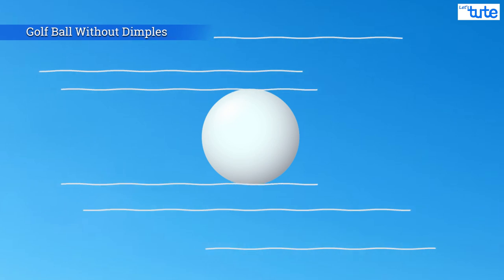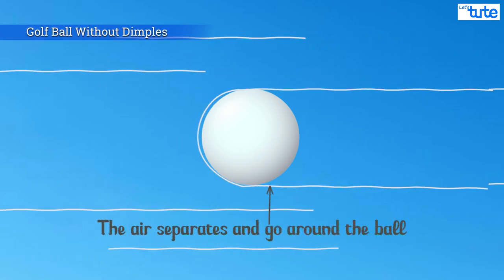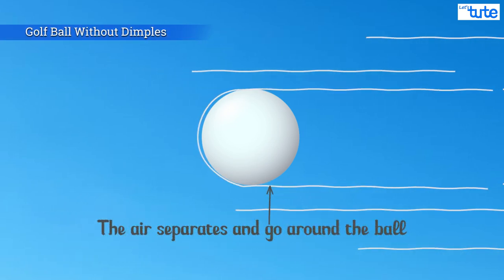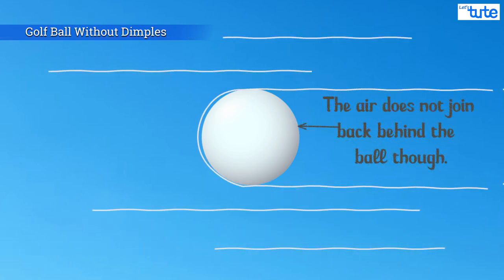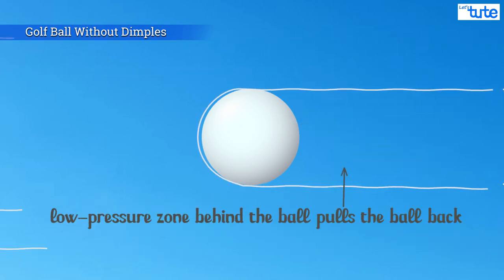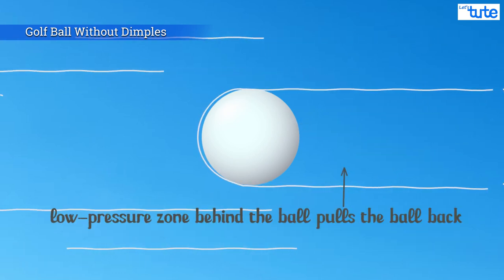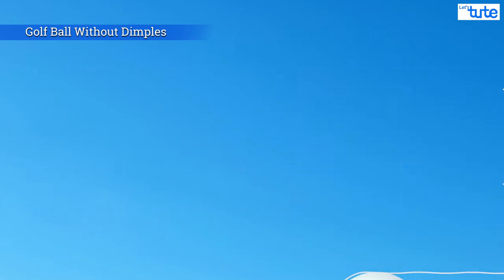When air flows around a smooth ball, the air separates and goes around the ball. The air does not join back behind the ball. This causes a low pressure zone behind the ball which pulls the ball back and thus slows it down.